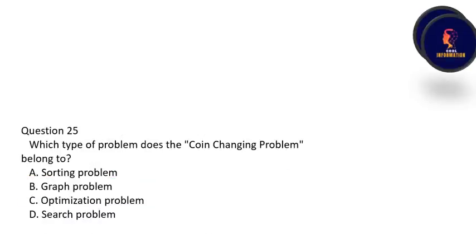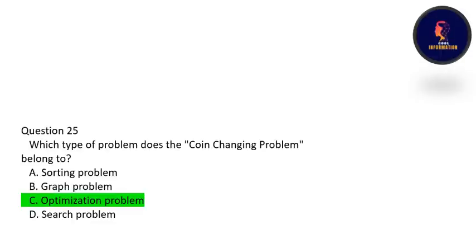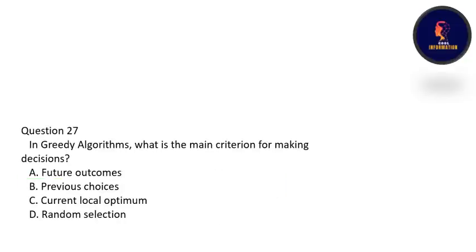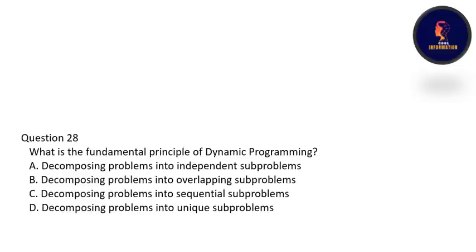Which type of problem does the coin changing problem belong to — sorting, graph, optimization, or search? The correct option is C — optimization problem. How does dynamic programming solve the longest common subsequence problem? By using a matrix to store the length of subsequences. In a greedy algorithm, what is the main criteria for making a decision? The main criteria is the current local optimum. What is the fundamental principle of dynamic programming? Decomposing problems into overlapping subproblems — option B is correct.